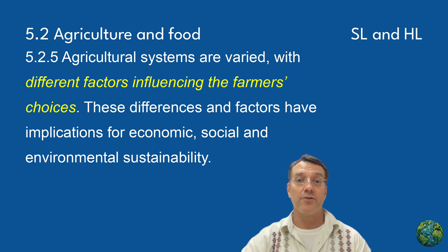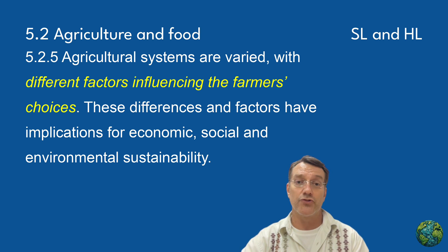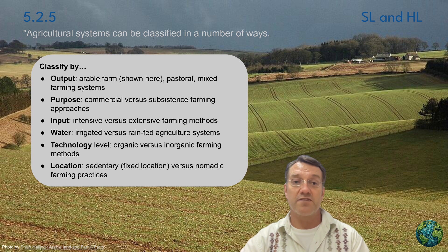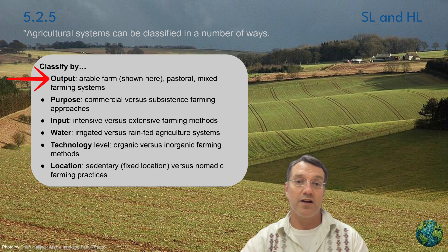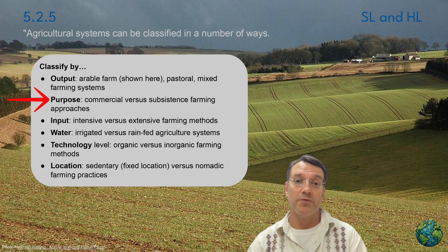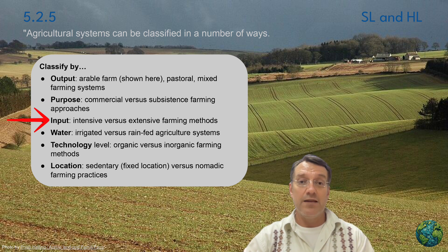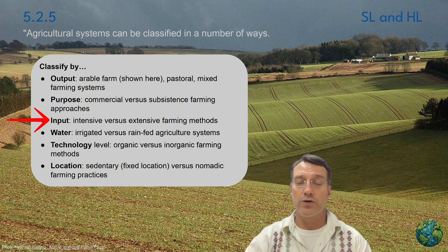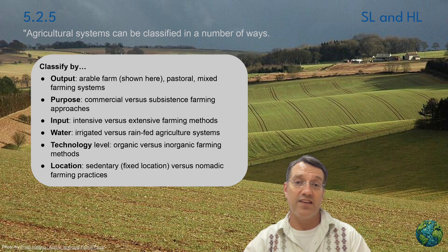Agricultural systems can vary based on many factors that influence farmers' choices, and these differences have major implications for economic, social, and environmental sustainability. Agricultural systems can be classified in several ways: by output, we might see arable farms focusing on crops, pastoral systems focusing on livestock, or mixed farming combining both. By purpose, we distinguish commercial farming aimed at selling products from subsistence farming aimed at feeding the farmer's family. By input intensity, we see intensive systems using high inputs on small areas versus extensive systems using lower inputs across much bigger areas. Each classification tells us something important about how the system works and what its impacts might be.